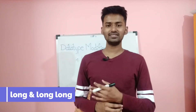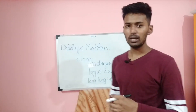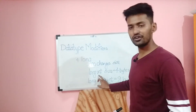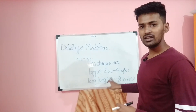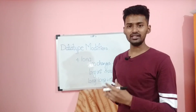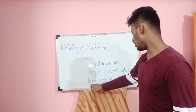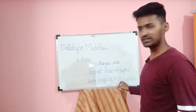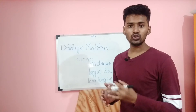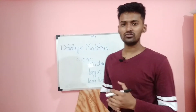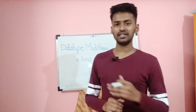The last data type modifier is long. Short changes the size of the integer to half — from 4 bytes to 2 bytes. However, when long is used in front of int, it keeps the size at 4 bytes. To double the size to 8 bytes, we have to use long long. So we can write long long int, or simply long long. Using just long alone does not change the size of the integer — we must use long long.